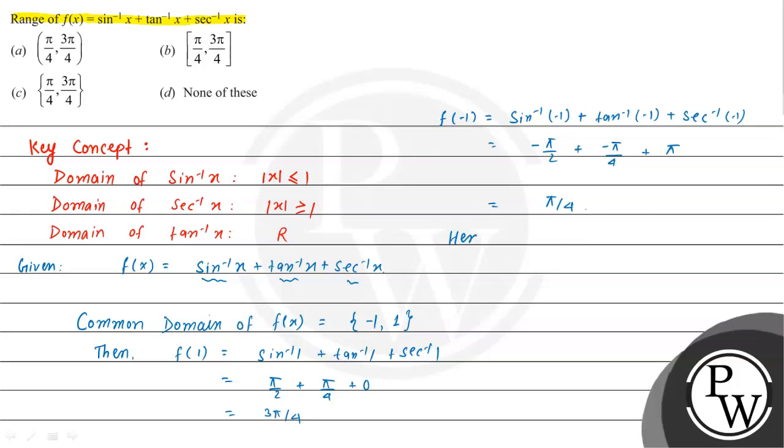Hence, we can say that range of f(x) will be from π/4 to 3π/4. So this is the final answer of the given question. Looking at the options, option C is our correct choice.